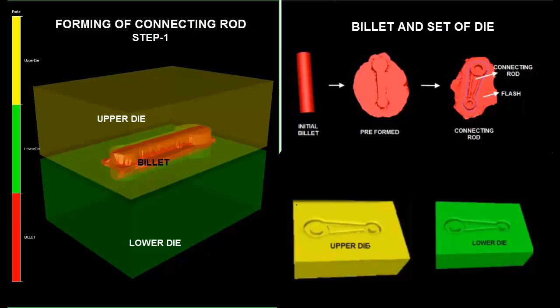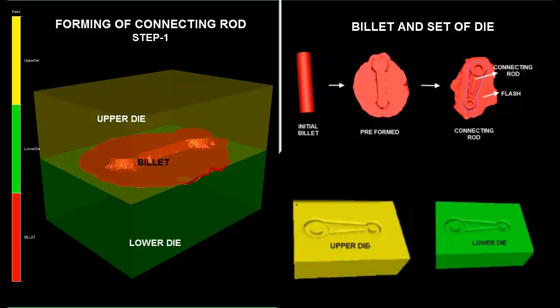On the bottom right hand corner, the details of upper and lower dies for step 1 are shown in yellow and green respectively.